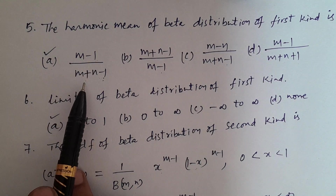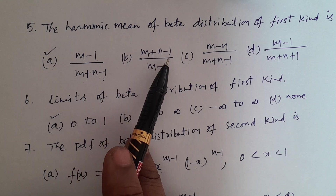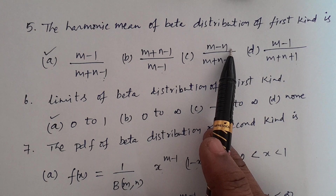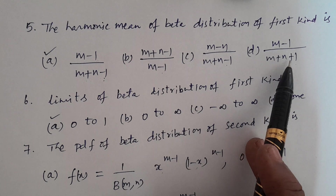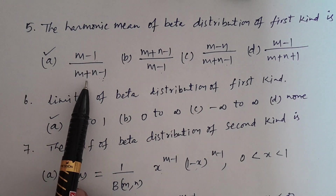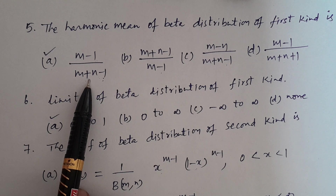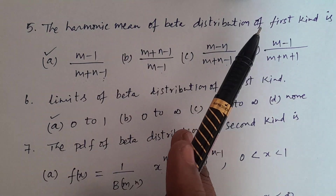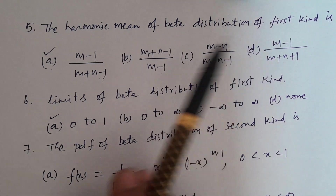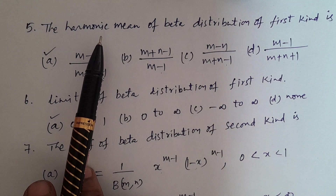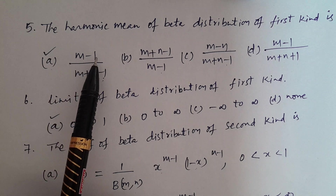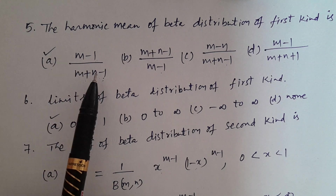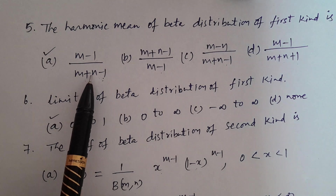Options: A — (m-1)/(m+n-1); B — (m+n-1)/(m-1); C — (m-n)/(m+n-1); D — (m-1)/(m+n+1). The correct answer is Option A: (m-1)/(m+n-1). This is the harmonic mean of beta distribution of first kind. In Telugu — harmonic mean HM value: Option A, (m-1)/(m+n-1), is the answer.